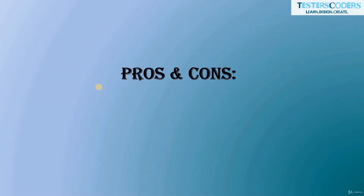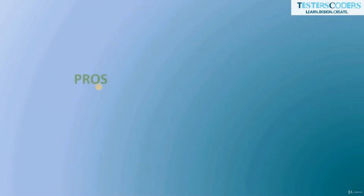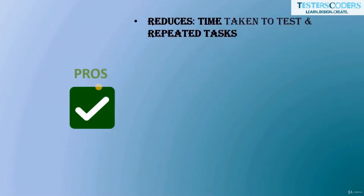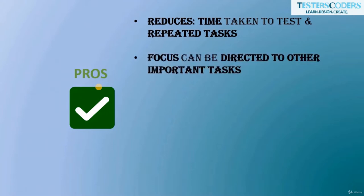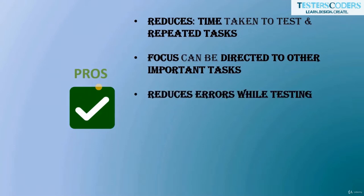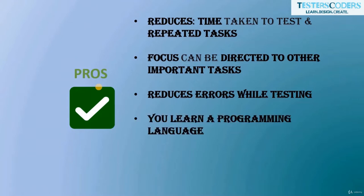Every new technology has pros and cons. The pros of automation testing include: it reduces the time taken to test and perform repeated tasks. If you have already automated a repeated set of tasks, you can direct your focus to other important work. It also helps reduce human errors while testing. A programming language is required to support automation.